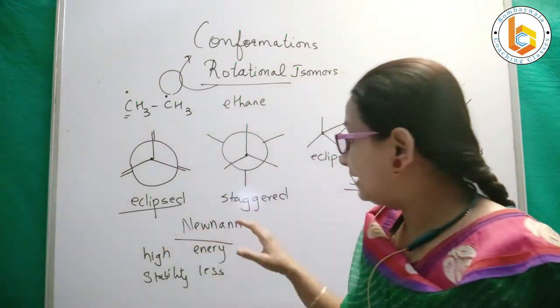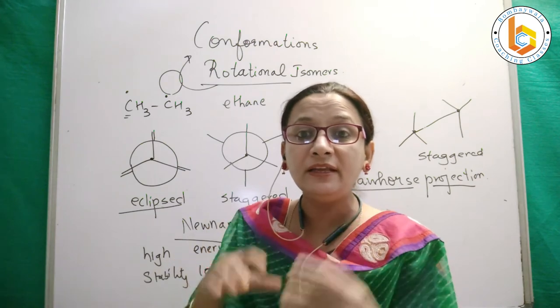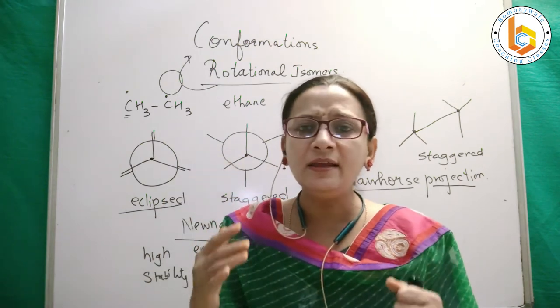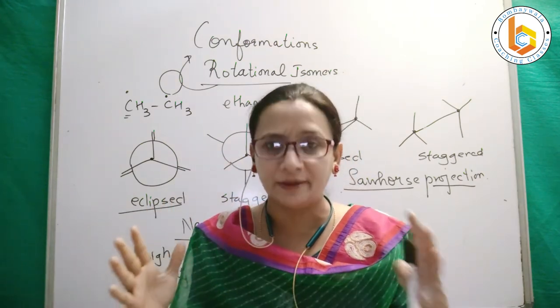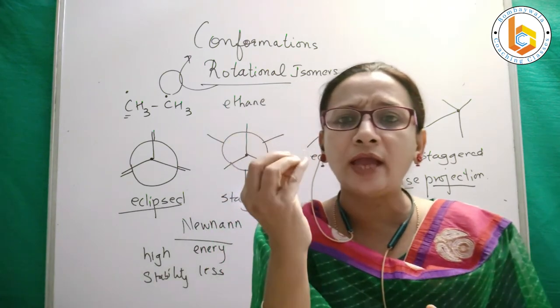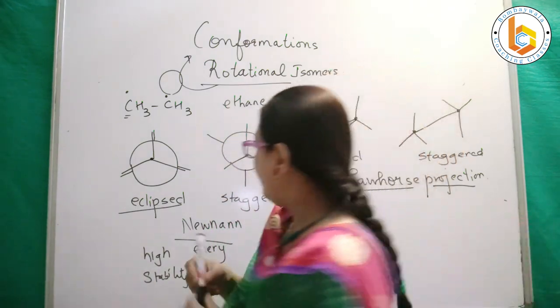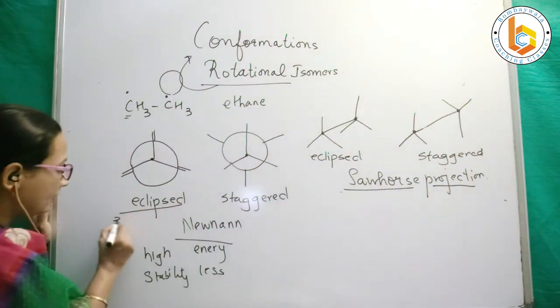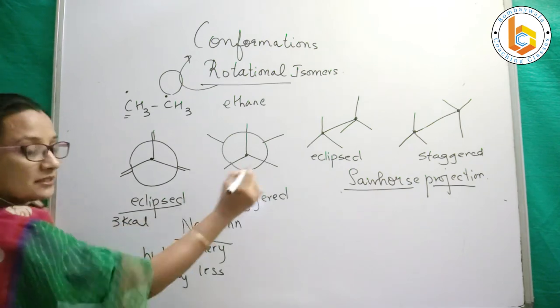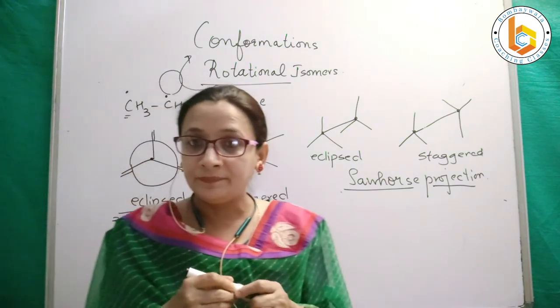So here we are seeing that in eclipsed, there is comparatively higher energy. It is hardly 3 kilocalories. Eclipsed has 3 kilocalories energy more than staggered. It is not much.